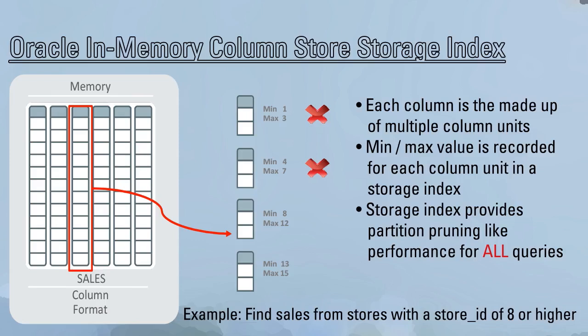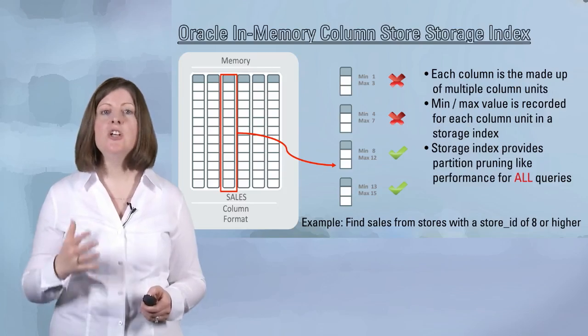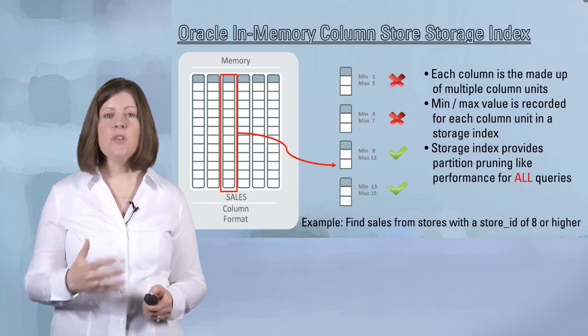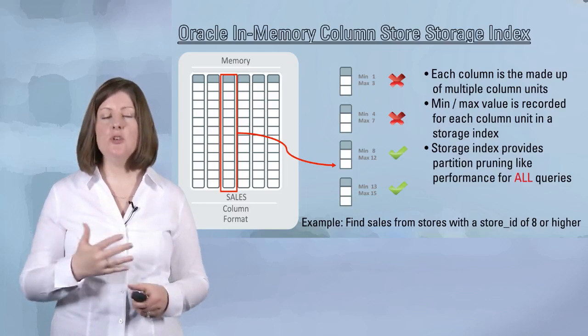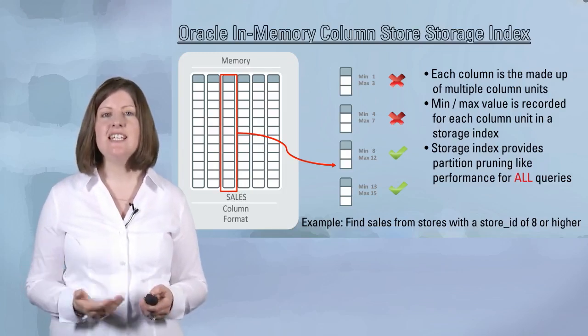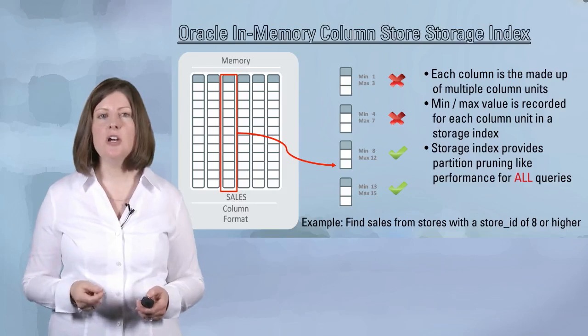I move on to the second IMCU — it also has no entries that are 8 or higher, so I skip that as well. I move on to the third IMCU and find there's a potential match for store ID 8 or higher, so I will scan that particular IMCU. I do the same for the fourth IMCU because it also has the potential to have values with store ID 8 or higher. By getting data elimination — not scanning data where there's no possible match — we're able to improve scan performance by reducing the amount of data that needs to be scanned.